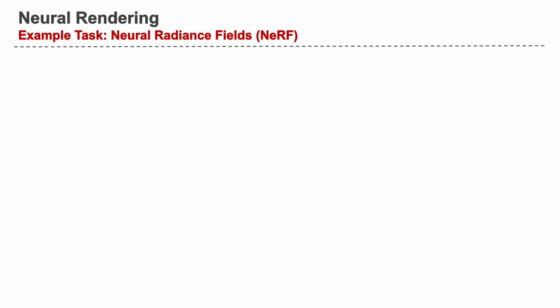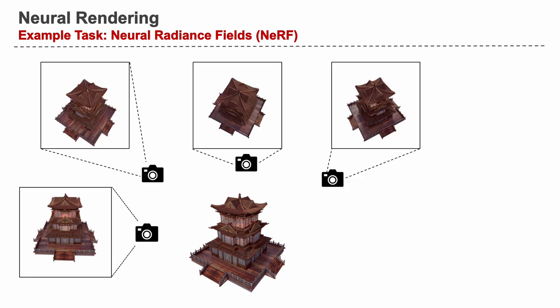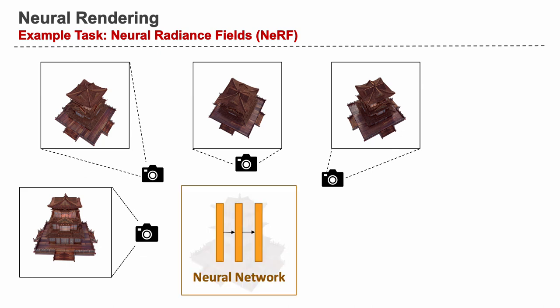Neural rendering is a new and exciting technique that generates photo-realistic images using deep neural networks. For example, in NERF, we begin by capturing photos from various viewpoints. These photos serve as the training dataset for the neural network that represents the 3D space.